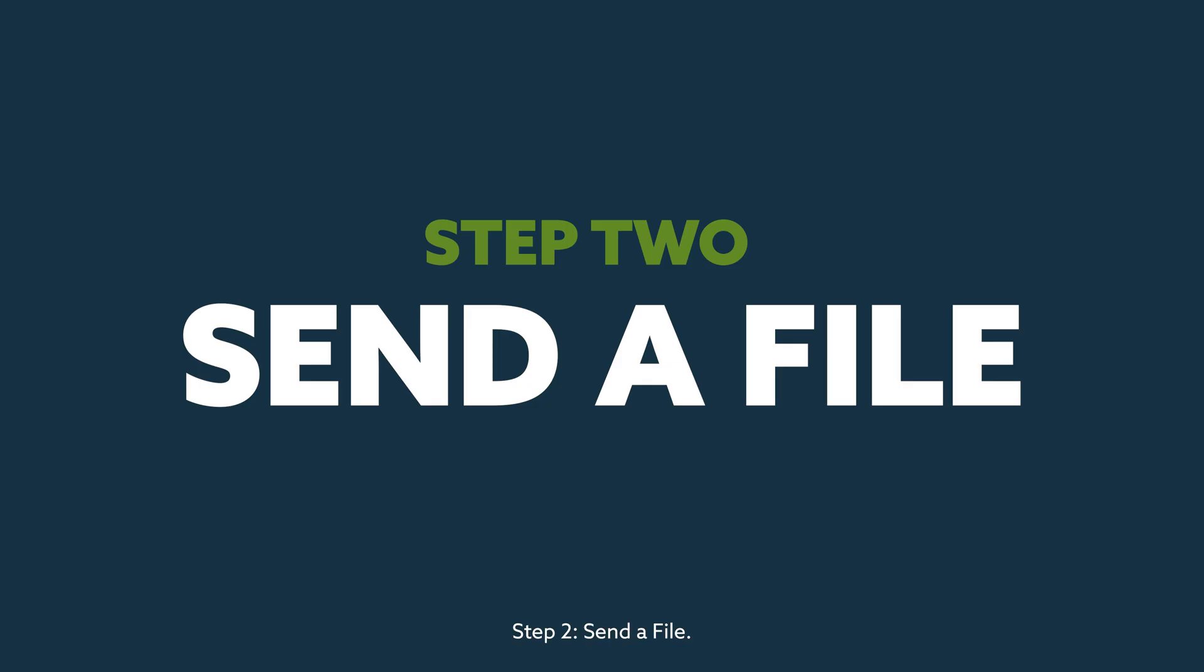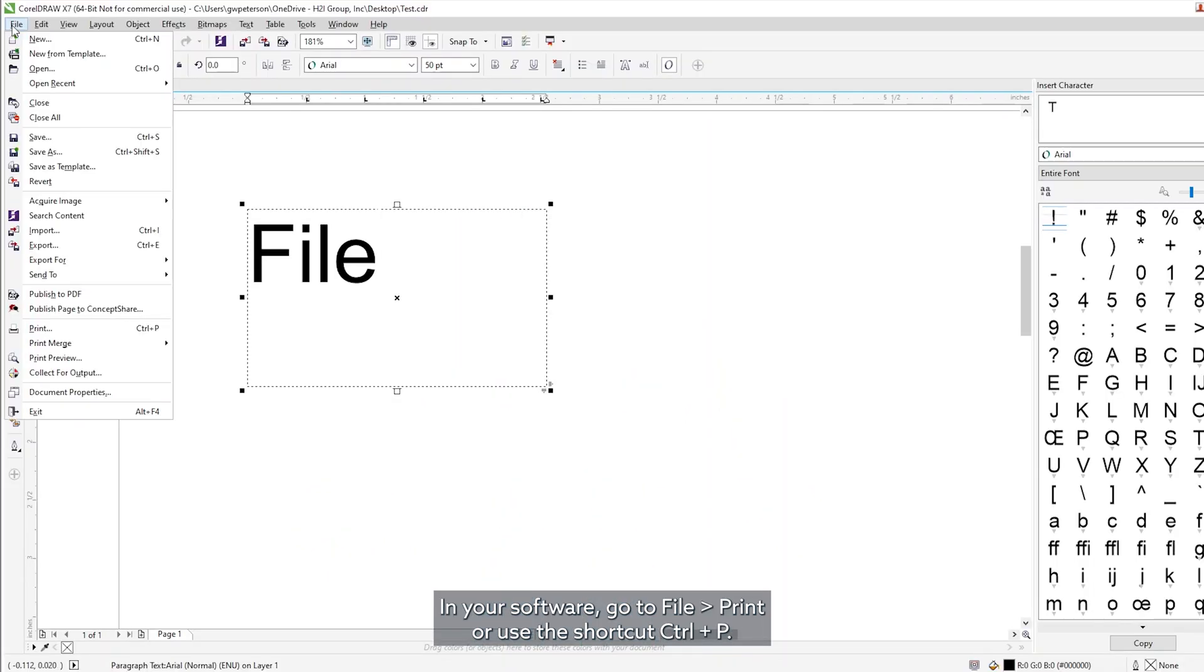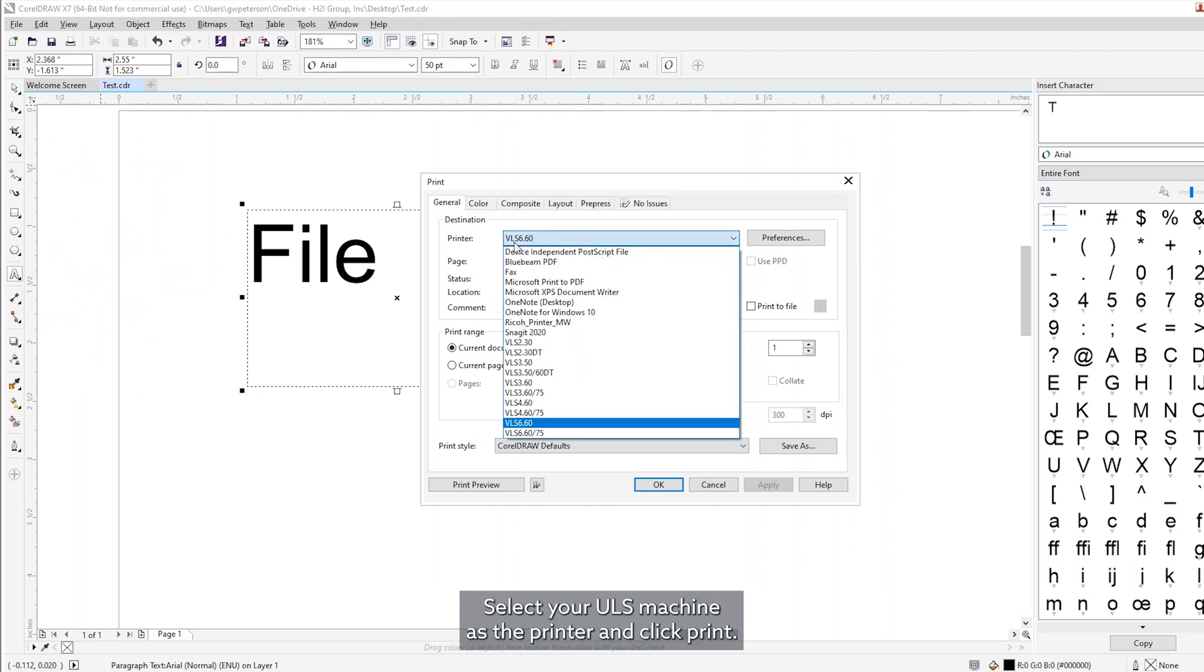Step 2: Send a file. Once you've finished designing your file, it's time to print. In your software, go to File, Print, or use the shortcut Control-P. Select your ULS machine as the printer and click Print.